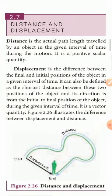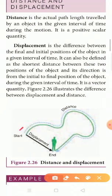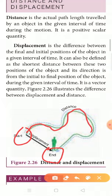So, what is distance and displacement? Let's start with a starting point — the house — and an end point — the school. If you come to school by bus, or if you come by road, we will see the distance and displacement. Distance is the path from the starting point to the end point.